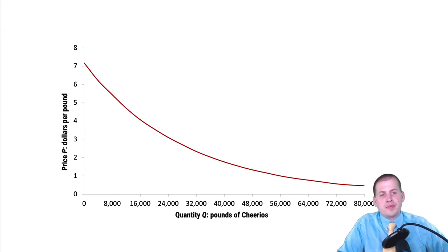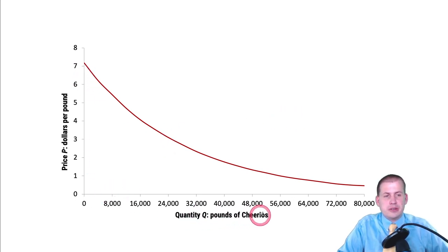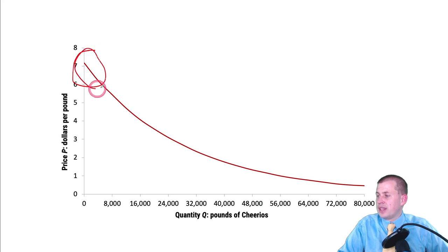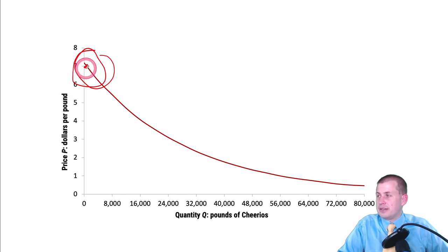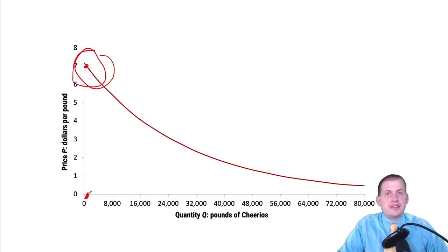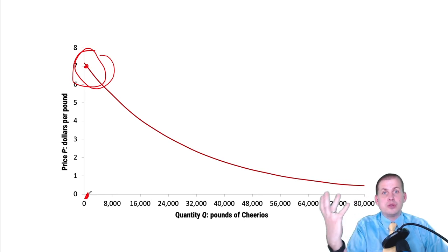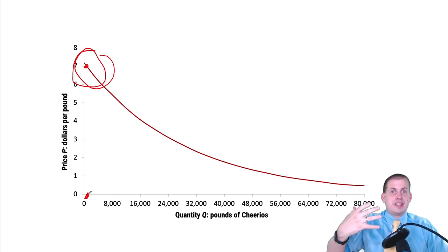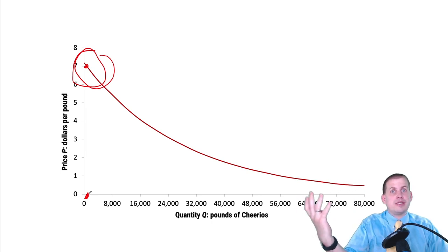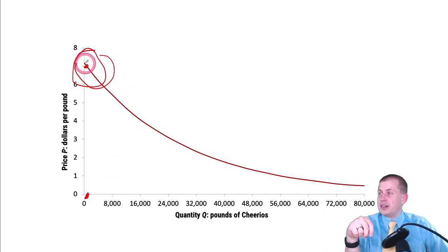This textbook example shows the relationship between the quantity of Cheerios and the price people are willing to pay. If Cheerios are $7 per pound, not very many people are willing to pay that — the quantity might be around 100 boxes. There are some people willing to pay $7 because they really love Cheerios; in their indifference curves they get tons of utility from them and will spend their money on Cheerios.